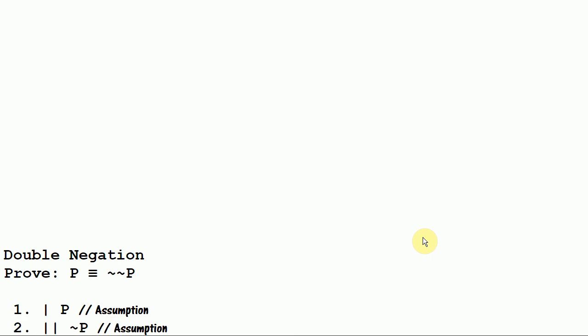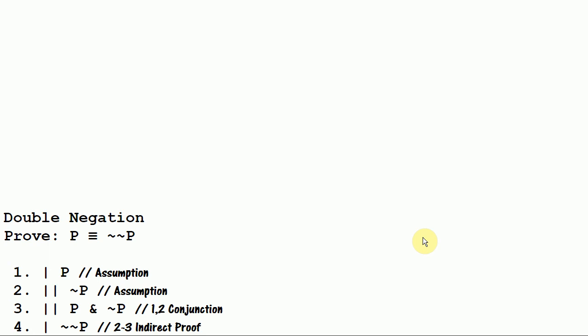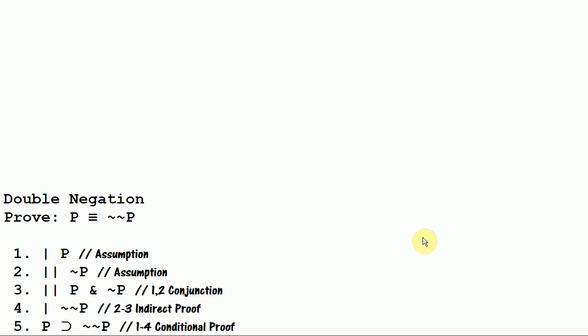We start by assuming P. And since we want to prove not not P, we will start with its negation. Not P is the opposite of not not P — one is the negation of the other. So we are going to assume not P. And now we can get a contradiction very quickly just by conjoining P and not P. And that lets us immediately end this indirect proof and we get not not P through indirect proof. And now we finish this off and we get P implies not not P.